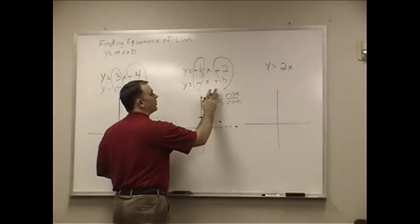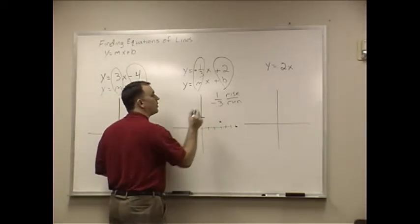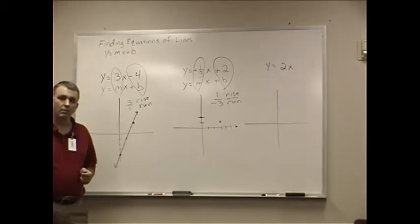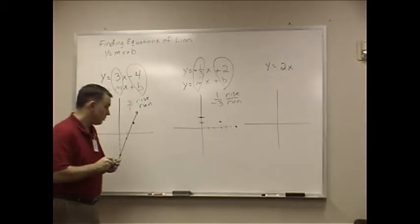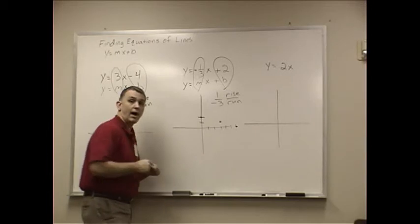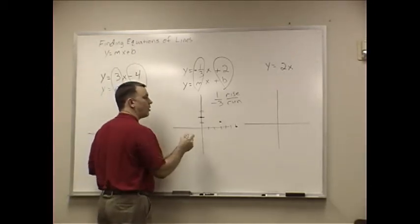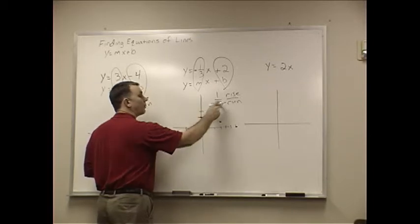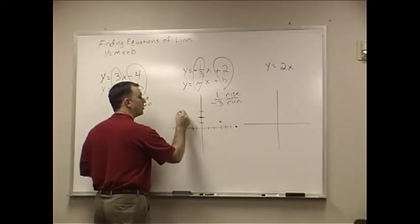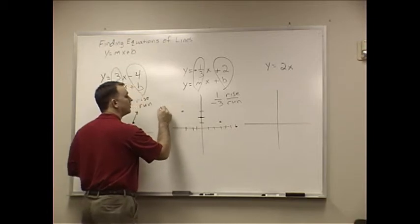Now, there's probably somebody out there wondering, what if I would have put the negative down on the bottom? That'll work also. I'll use a different color here. I'll use the red. That means I have a rise of 1. It means I go up 1. But my run is negative. So I go to the left 3. Go up 1 to the left 3.